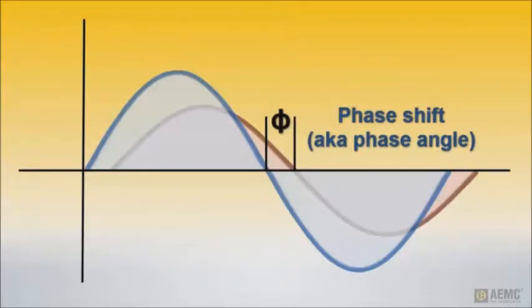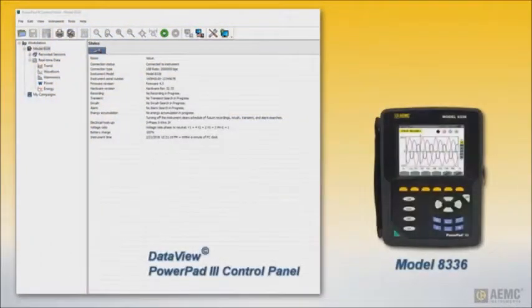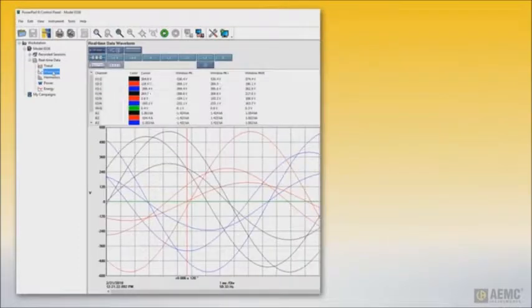One way to display phase shift is via a phasor diagram. To illustrate, we have connected an AEMC PowerPad 3 Model 8336 Power Quality Analyzer to an AC distribution system and a computer running DataView with the PowerPad 3 Control Panel. When we view real-time data from the instrument, we have the option of displaying a phasor diagram.